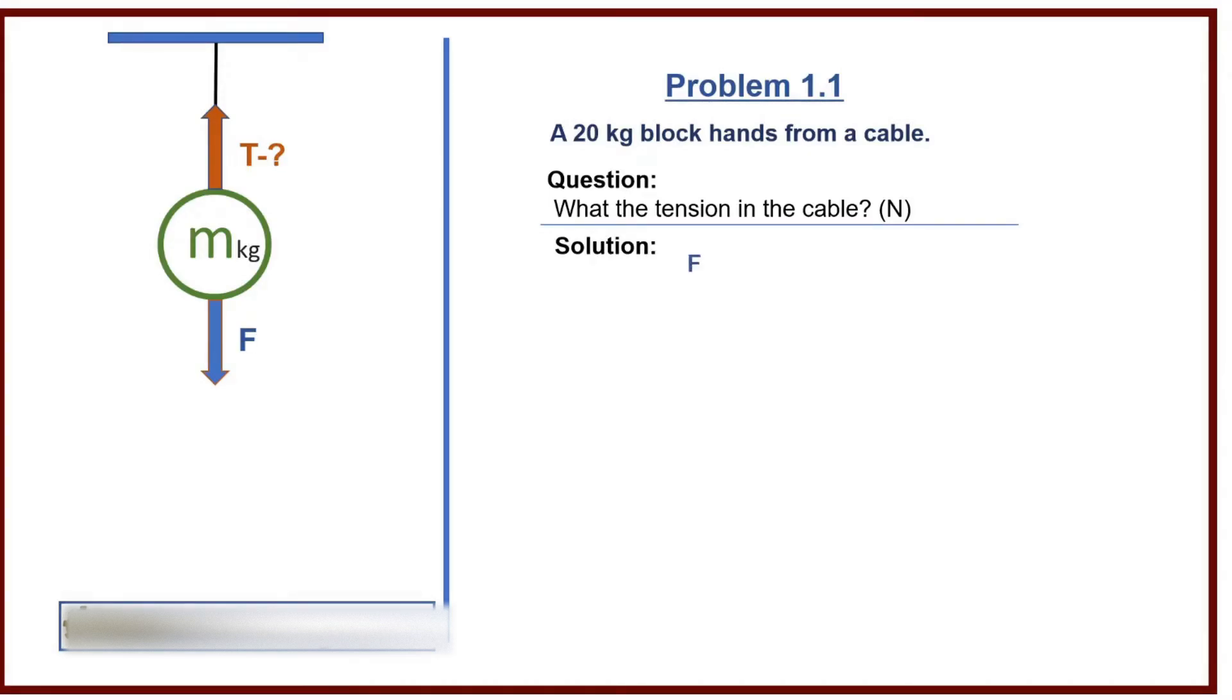Solution: F equals M times acceleration due to gravity. M equals 20 kilograms. G equals 9.806. F equals 20 times 9.806, equals 196.12 newtons.